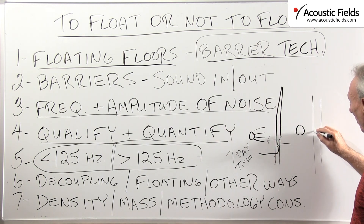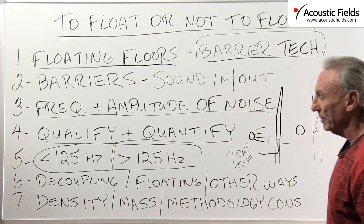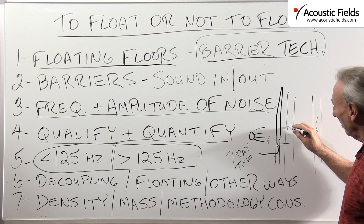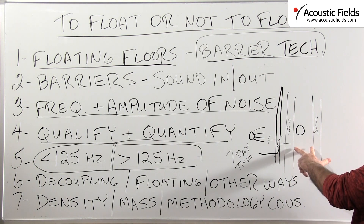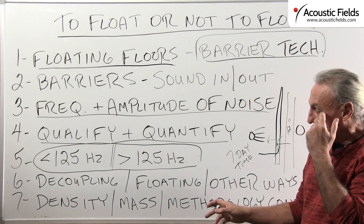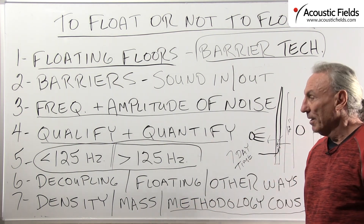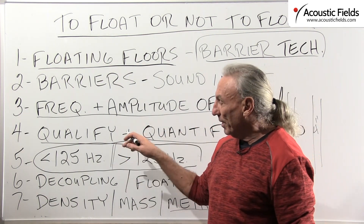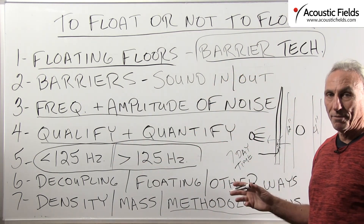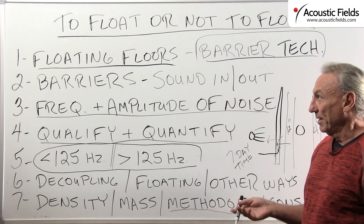Above 125 Hz, the wall could be four inches. Below 125 Hz, it could go up to 12 inches. So there's a big difference in thickness, materials, and the way you build it. First we have to know what our problem is, how big it is, and then build the right barrier to satisfy the requirements of the noise — not what we think is necessary.